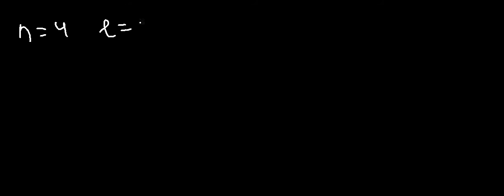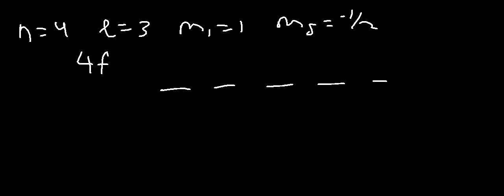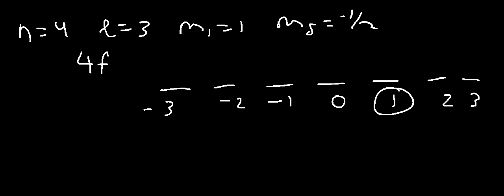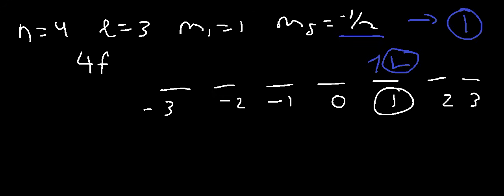Now the next case: if N is 4, L is 3, ML is 1, and MS is minus 1/2, we have the 4F sublevel with 7 orbitals. We're focused on the orbital with ML = 1. There are 2 electrons in that orbital, but only one has a spin of minus 1/2. Therefore, when you have all four quantum numbers, the answer is always 1 electron if those quantum numbers are allowed, and 0 if not. This is based on Pauli's exclusion principle, which states that no two electrons can have the same set of four quantum numbers — these quantum numbers identify a specific electron.